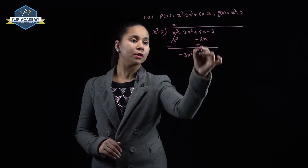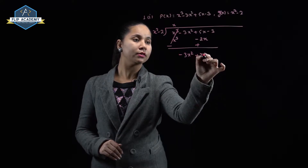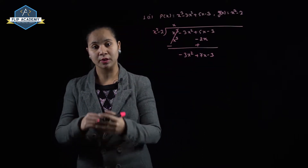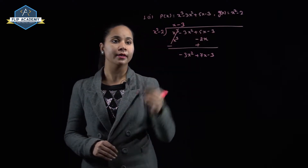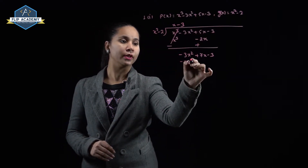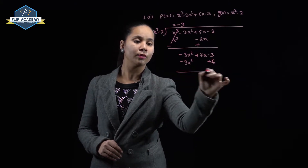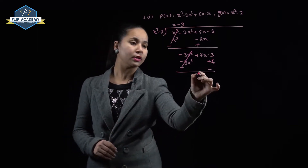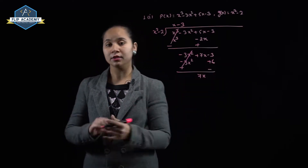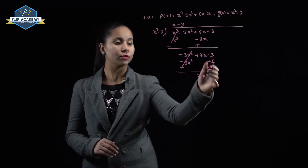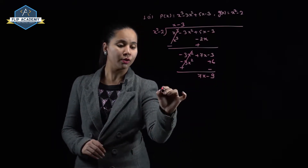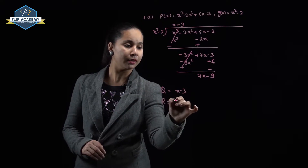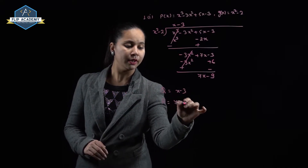x² goes into -3x², -3 times. Multiply -3 by (x² - 2) to get -3x² + 6. Change the sign. -3x² cancels, giving 7x - 9. So the quotient q(x) = x - 3 and the remainder r(x) = 7x - 9.